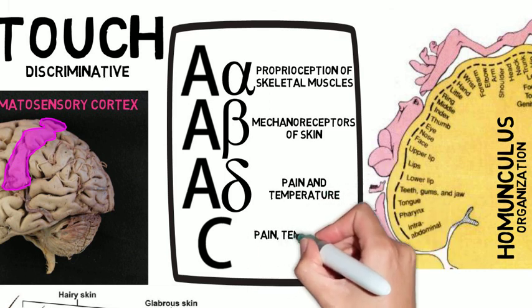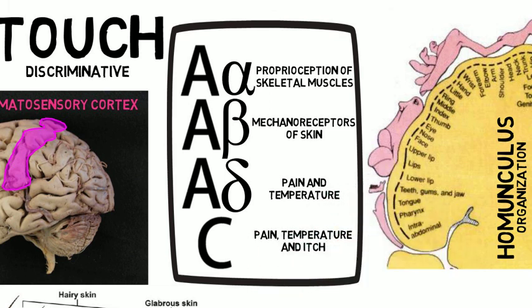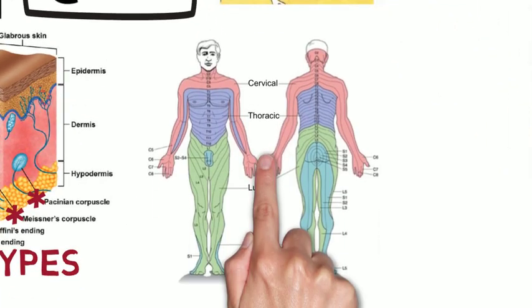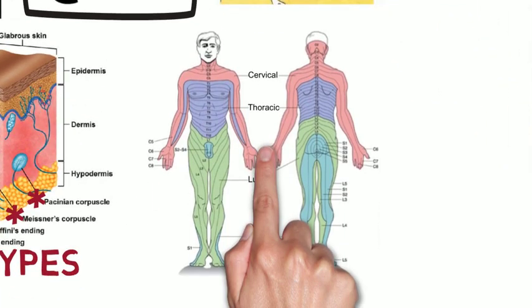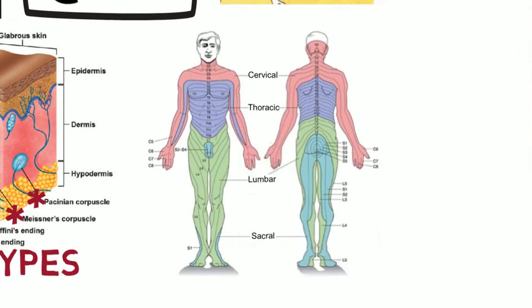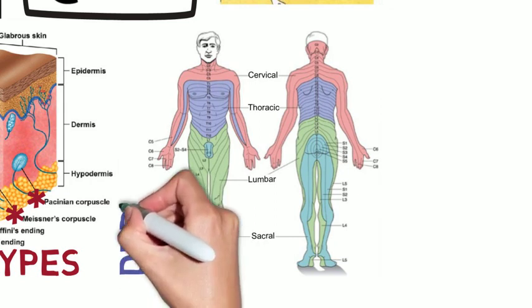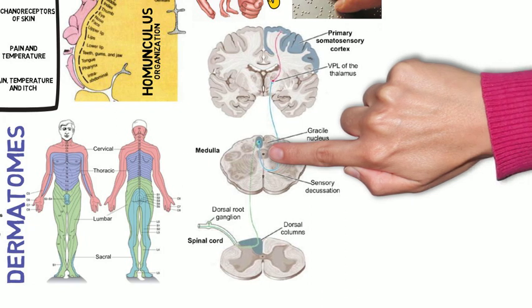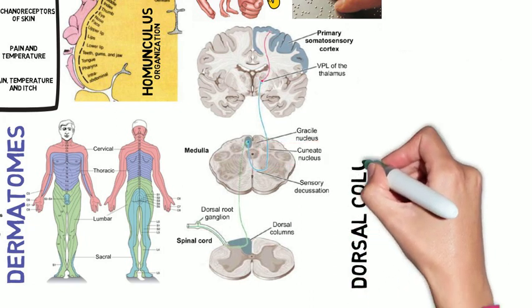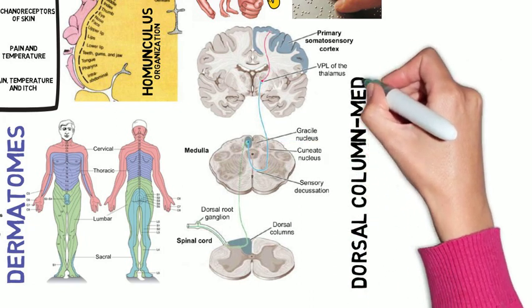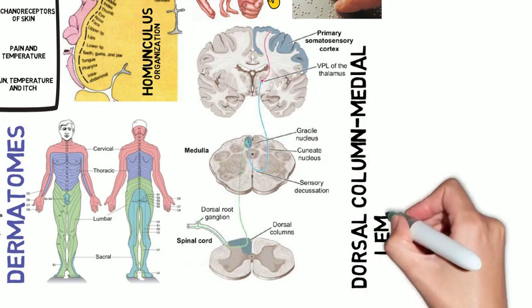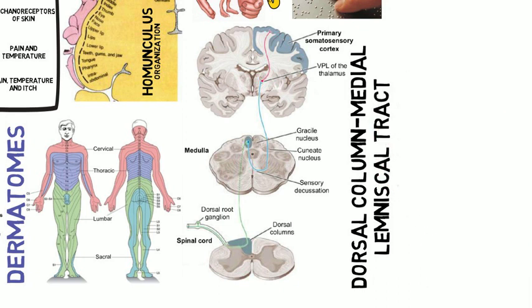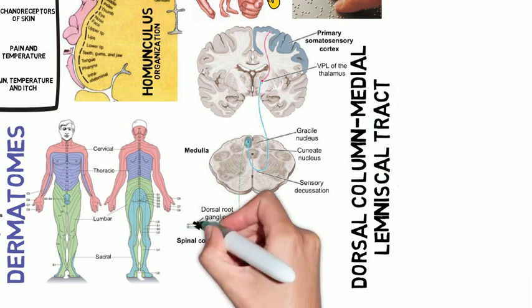Somatosensory information from the body reaches the spinal cord via dorsal root ganglia. The area of skin organized to a single dorsal root ganglion is called a dermatome. Touch sensory information reaches the cortex via the dorsal column medial lemniscal tract. The first-order neuron cell body is in the dorsal root ganglion.